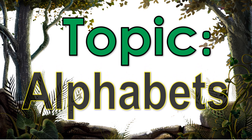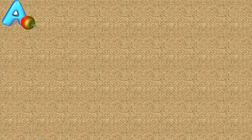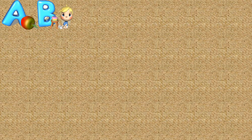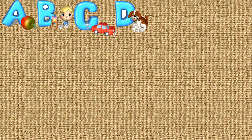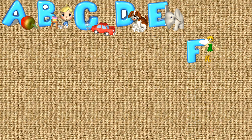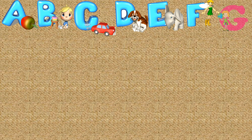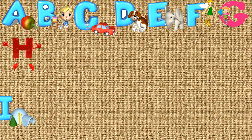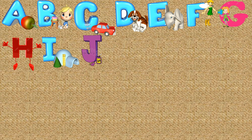Topic: Alphabet. A — Apple. B — Baby. C — Apple. D — Dog. E — Elephant. F — Fairy. G — Girl. H — Hand. I — Igloo. J — Jam. K — Key.